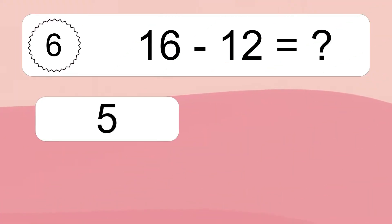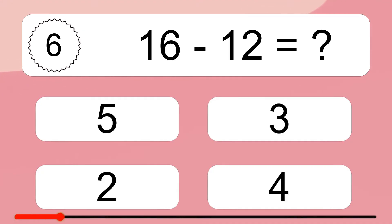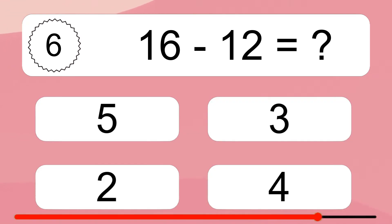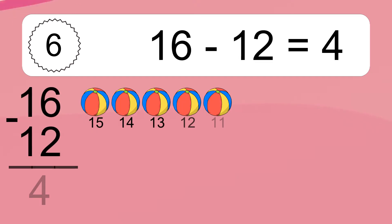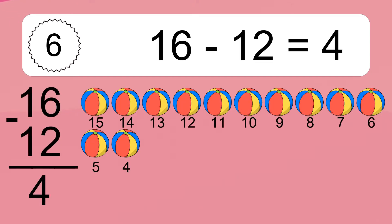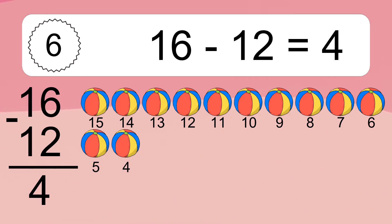16 minus 12 equals what? 16 minus 12 equals 4. Let's count it: 15, 14, 13, 12, 11, 10, 9, 8, 7, 6, 5, 4.